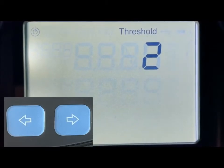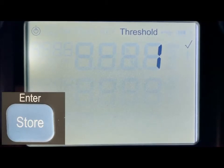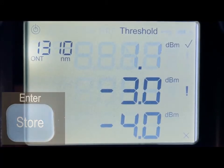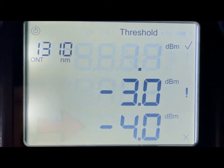For this training, we will be using threshold 1. Now press the ENTER button to go into that threshold and set the values. The first wavelength is 1310. The top value, which is the pass value, will be flashing. The next one down is the warning value and then the fail value.